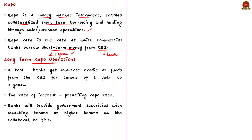Long-term repo operations (LTRO) is a tool under which banks can get low-cost credit or funds from the central bank for a period of one to three years, and the rate of interest will be the prevailing repo rate but not higher than the repo rate. To receive such funds, the banks provide government securities with matching tenure as collateral to the RBI. Banks can thus receive liquidity for one to three years at the policy repo rate, translating into lower interest rates for customers.